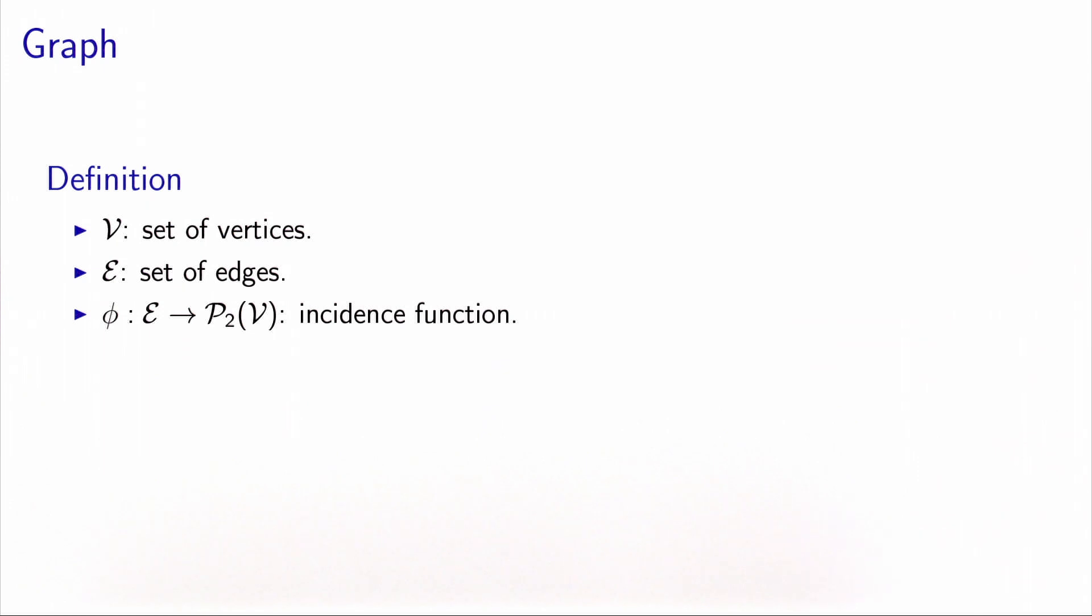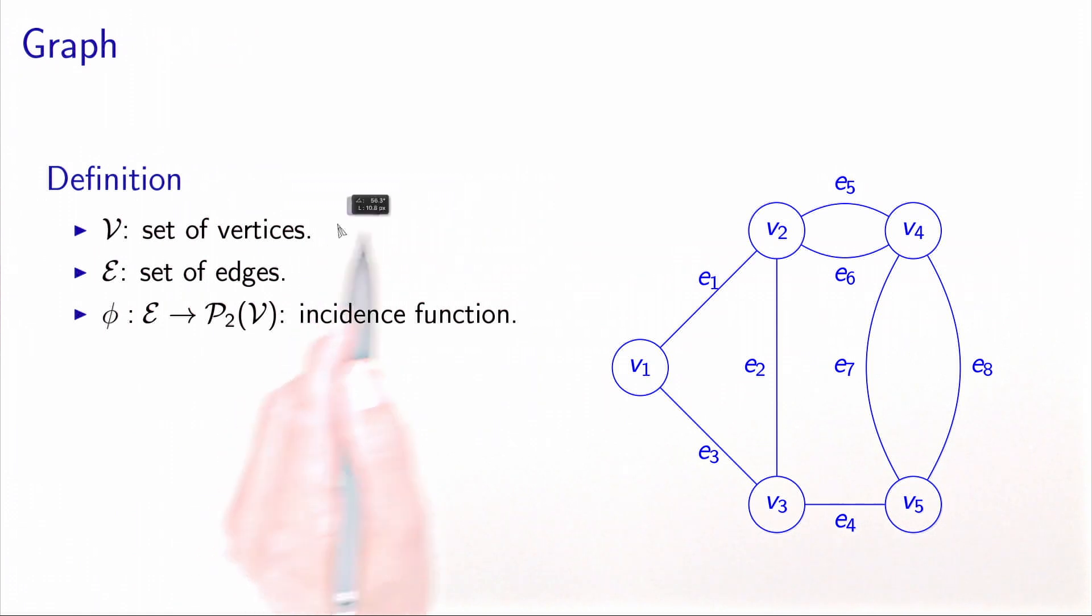The relationship between vertices will be captured by edges. There will be a function that maps the edges with pairs of vertices. Let's look at a picture that will give us better intuition of what a graph is. Here, the vertices are represented by circles, and the edges are represented by lines that connect two of these circles. This is typically the way to represent a graph.